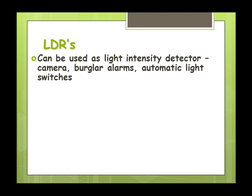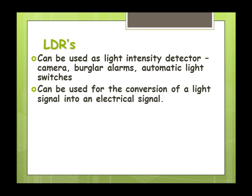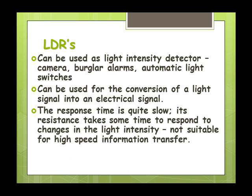Now where do we use LDRs? It could be a light intensity detector. So it could be on a camera to determine whether the flash needs to go off. On a burglar alarm. Automatic lights, which is like the street lights. Can be used for conversion of light signals into electrical signals.